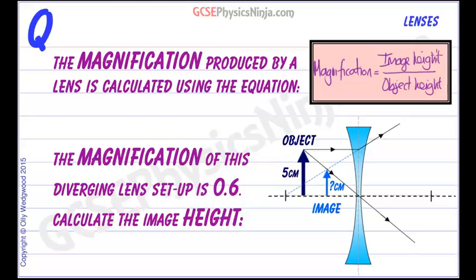If your image is twice as big as the object, then we have a magnification of 2.